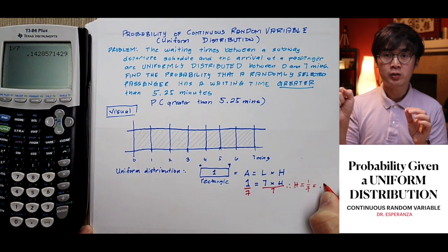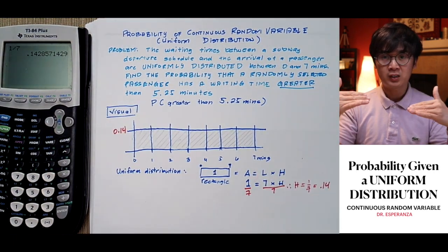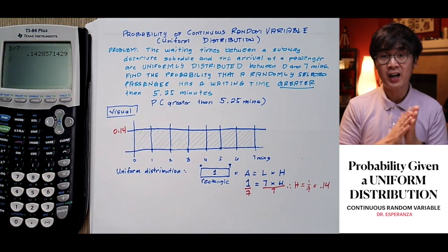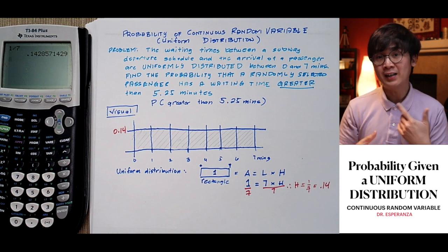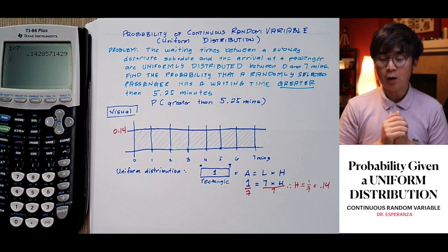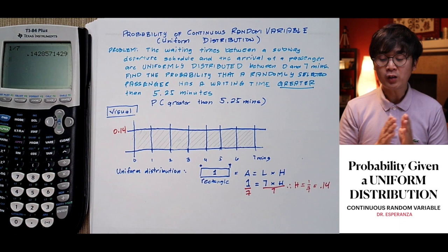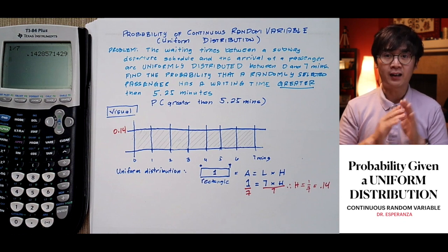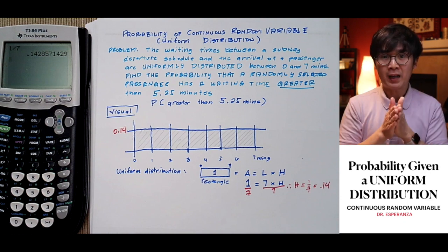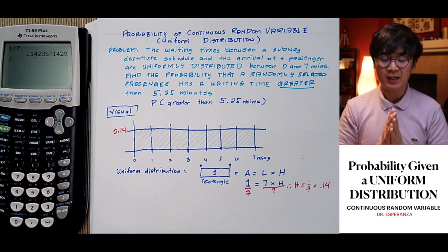So 1 equals 7 times height. Using algebra, divide both sides by 7, and the height equals 1 over 7, or in decimal form, 0.14.